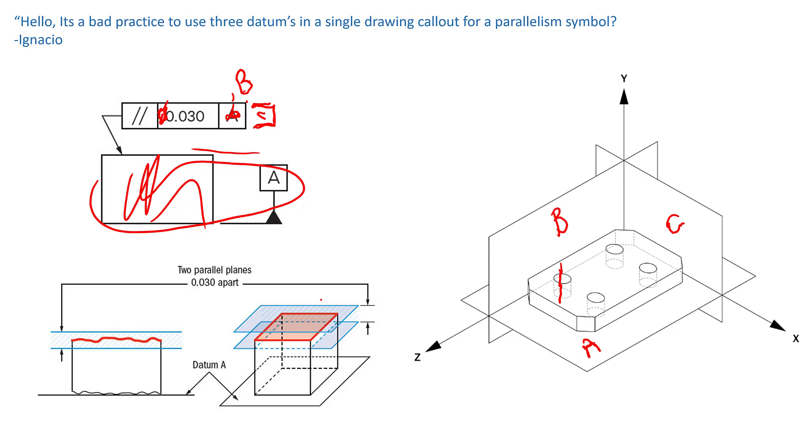Now remember, for parallelism, it doesn't matter whether it's on a surface or a feature of size. When it comes to parallelism, it is not controlling location.